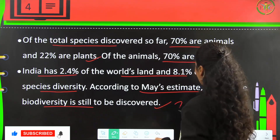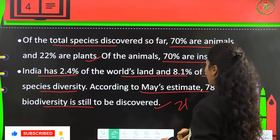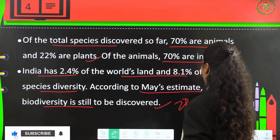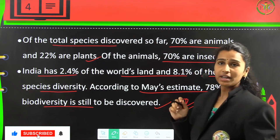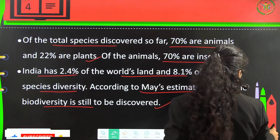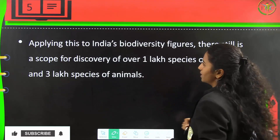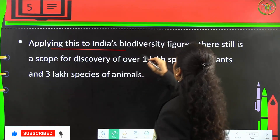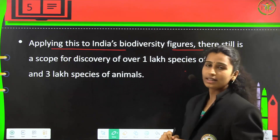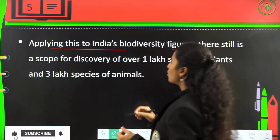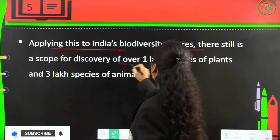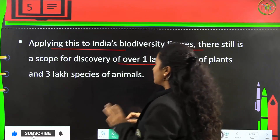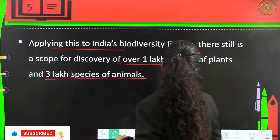So far we have discovered only 22 percent of species, and 78 percent of it is still to be discovered. Applying this to India's biodiversity figures, there is still a scope for the discovery of 1 lakh species of plants and 3 lakh species of animals.